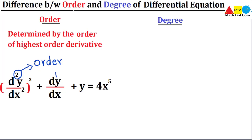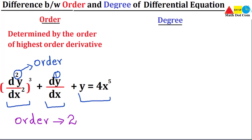You have to see the order of the highest order derivative, so you need to check the derivative terms. These numbers that I have circled indicate the order of each derivative. The highest order among them will be considered as the order of the differential equation. The highest order is 2, so the order of this differential equation is 2. This is how you can easily determine the order of any differential equation you are given.